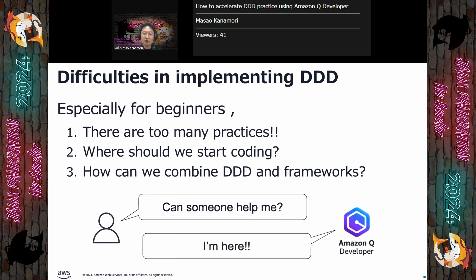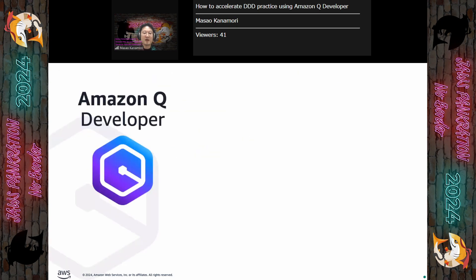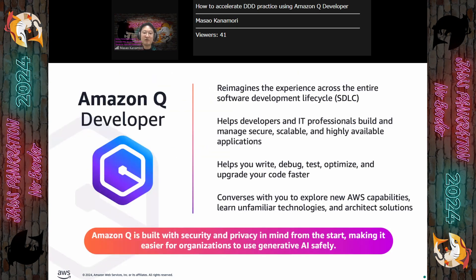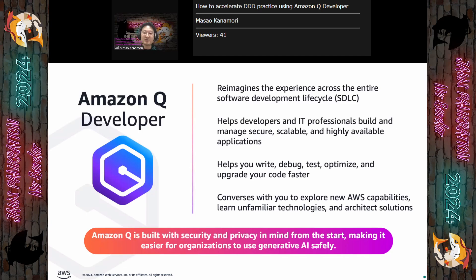Amazon Q Developer is here to support you. Amazon Q Developer is an AI code assistant service by AWS. It supports all of your development tasks, including building on AWS. It helps developers be more efficient, knowledgeable, and proficient by integrating seamlessly into the app development cycle.